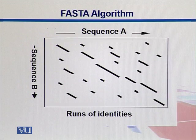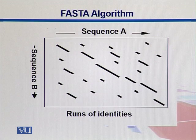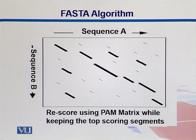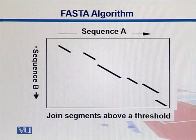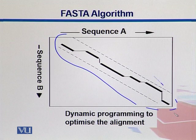Here is how FASTA works. We take sequence A and sequence B, and within those sequences we look into small chunks or fragments. We align them together and see that most of the similarities fall around a diagonal line. We call these runs of identities — some smaller and some larger length fragments. We then take those fragments and re-score them using matrices like PAM matrices, keeping only the top scoring segments; the rest are trimmed out. We then join the retained segments that have scores above some threshold with one another, and perform dynamic programming to optimize those alignments. The segments in the middle are the ones highly related to one another.